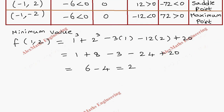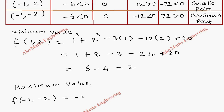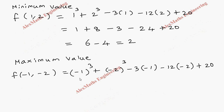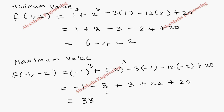For the maximum value, we use the point (-1, -2). f(-1, -2) = (-1)³ + (-2)³ - 3(-1) - 12(-2) + 20 = -1 - 8 + 3 + 24 + 20 = 38. So the maximum value is 38.